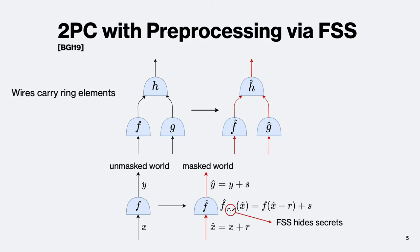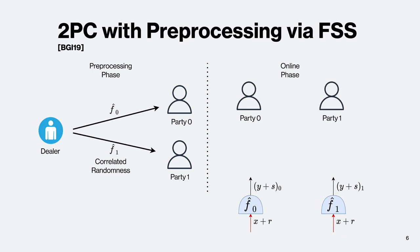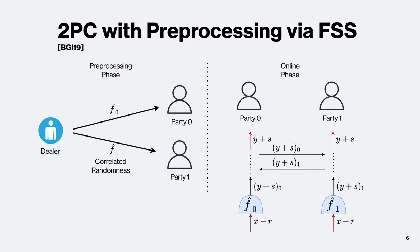The key idea is that since r and s must be kept secret, one can use FSS to secret-share this function f-hat, which still hides r and s. Once done for all gates and wires, the dealer gives out FSS keys for all gates in the masked evaluation during pre-processing. In the online phase, both parties evaluate each gate locally using their FSS shares. For example, for gate f, both parties input x plus r, and their outputs are additive secret shares of y plus s. Both parties then reveal y plus s to each other and computation proceeds.